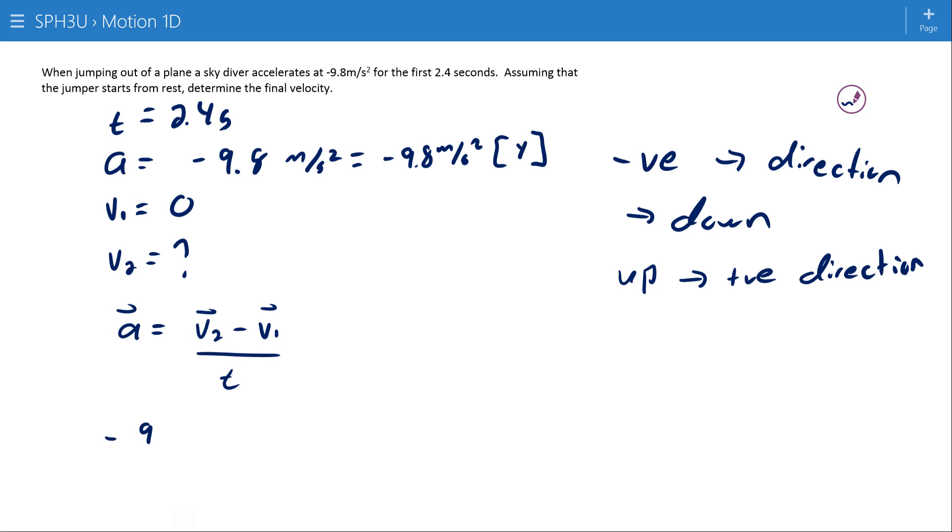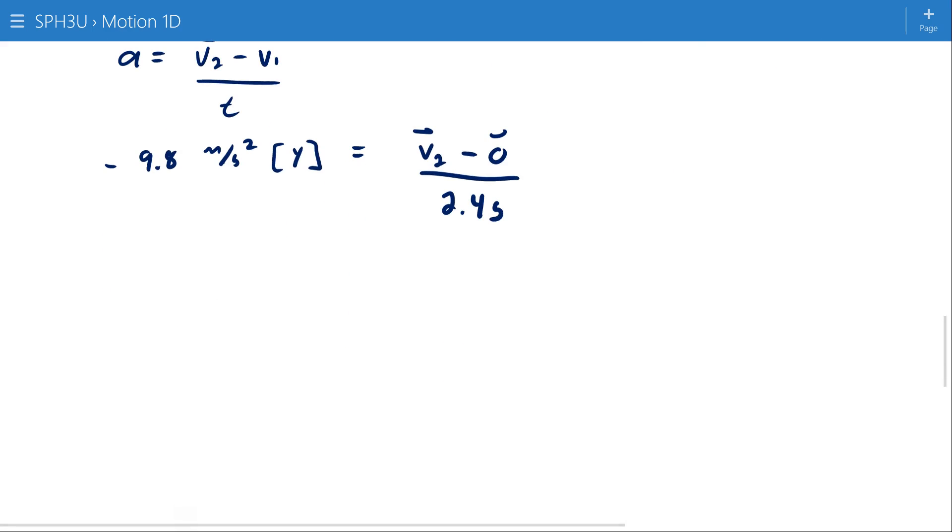So, negative 9.8 meters per second squared up equals v2, that's what we're looking for, minus 0, divided by the time of 2.4 seconds. And v2 minus 0 is just v2 over 2.4 seconds.